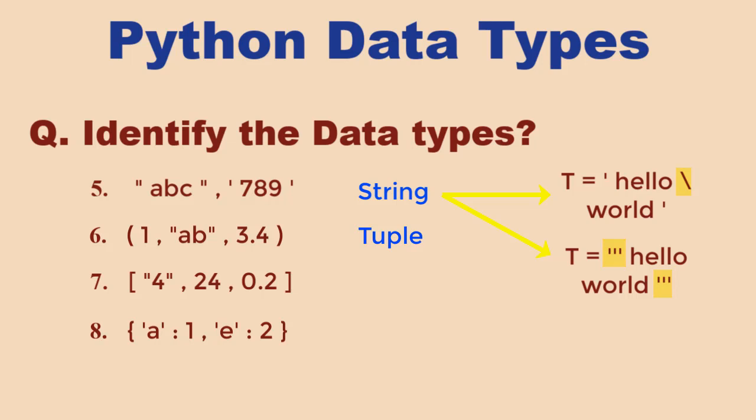Next is tuple. They contain ordered collections of items of different data types. The items of a tuple are separated with a comma and are enclosed in round brackets. Next is list, which can contain data of different types.